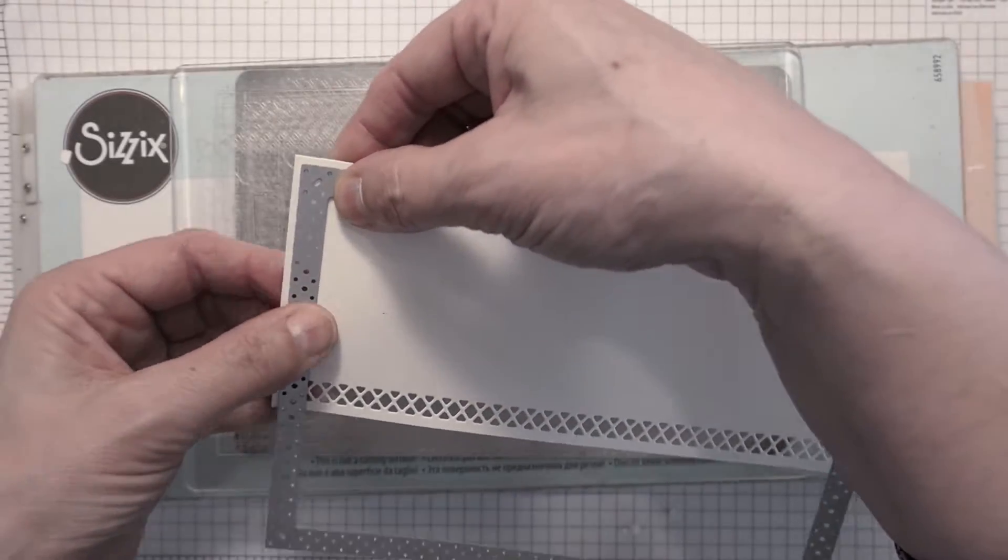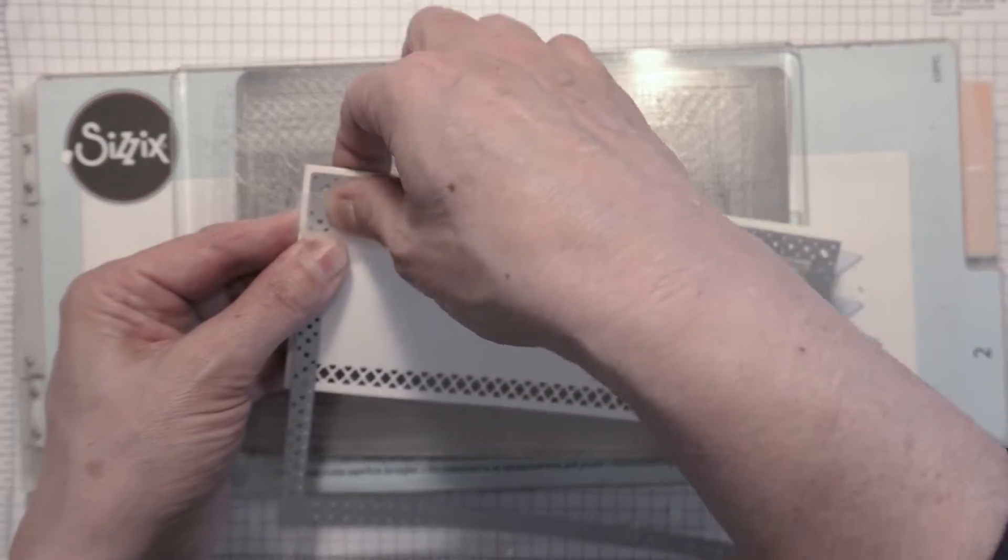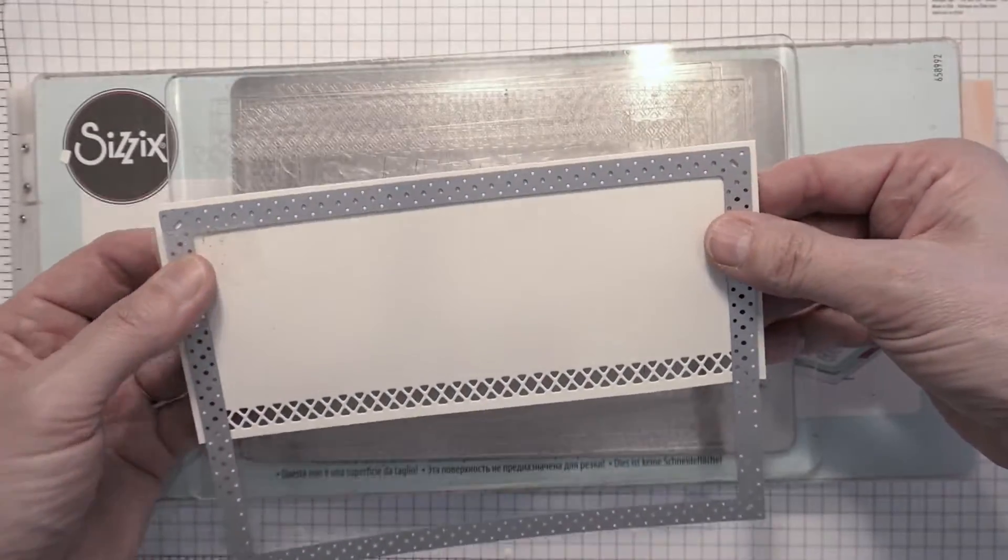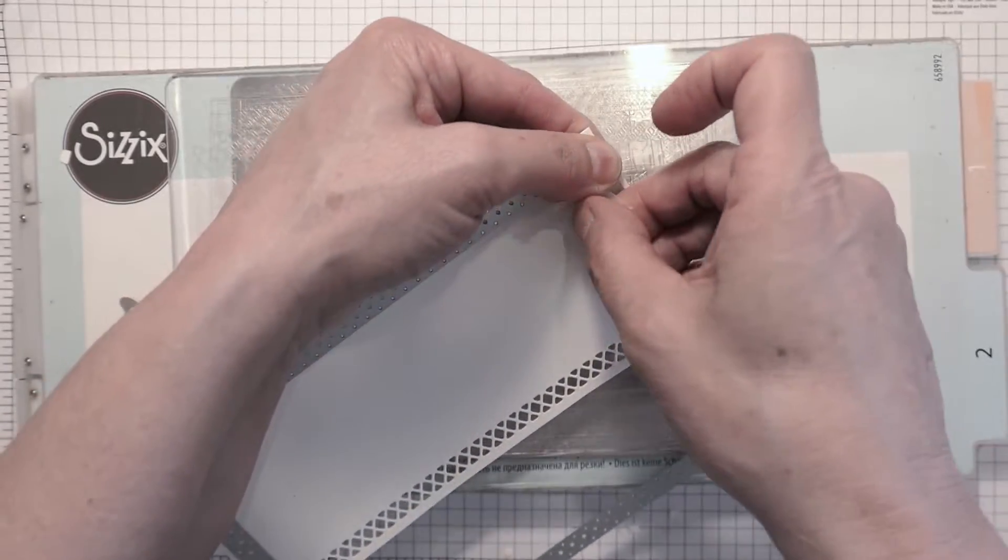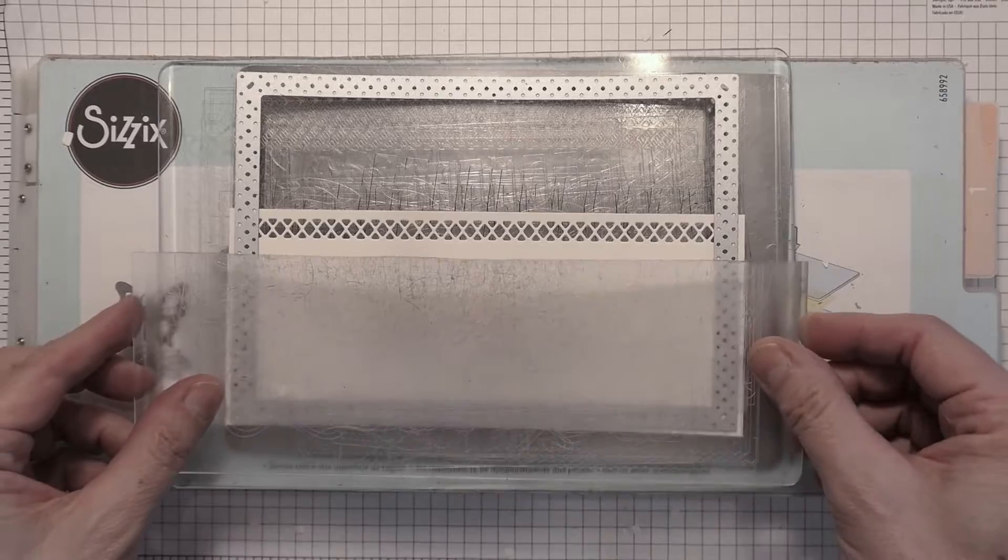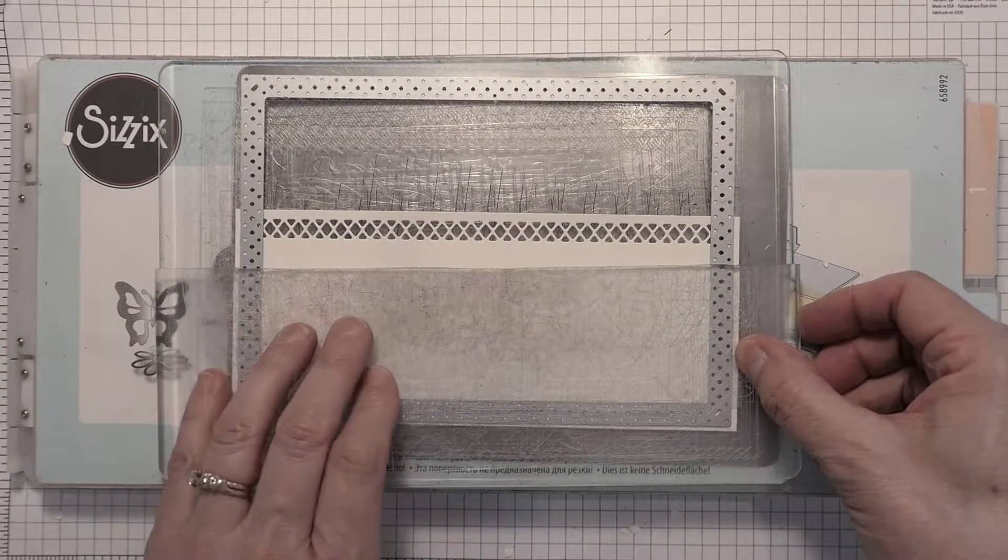What this has allowed me to do is place that on top and die cut only a portion of that die. It's as easy as running it through once, lining up the pattern, and then when you feel it click into place, simply tape it, let the other side click into place and tape that, and run it through again. This results in a perfect die cut with no seams.